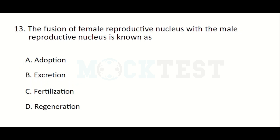The fusion of female reproductive nucleus with the male reproductive nucleus is known as — Option A: Adoption, Option B: Excretion, Option C: Fertilization, Option D: Regeneration. The answer is Fertilization.